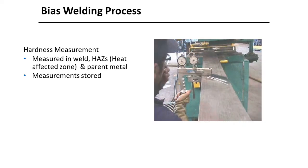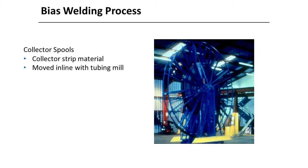Hardness is measured in the weld, heat affected zone, and parent metal, and all measurements are stored. After all bias welds are formed, the strip is collected onto spools as the final strip assembly, which is then taken to the mill to form coiled tubing. Collector spools ride on a pocket of air so they can be pushed by hand into place.